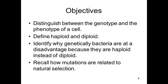Do bacteria have mommies and daddies? No, just mom. So guess how many copies they have of most of their genetic information? One. They're what's referred to as haploid. Diploid is two copies; haploid is one.